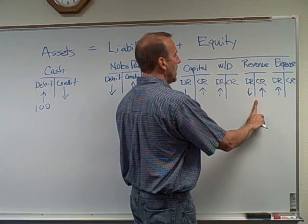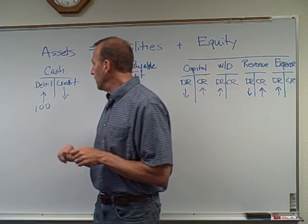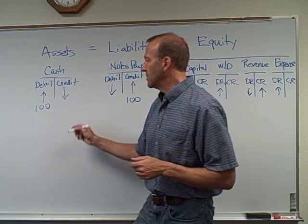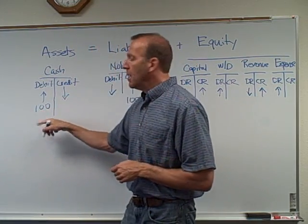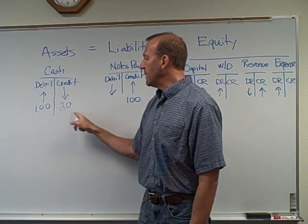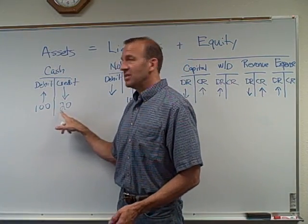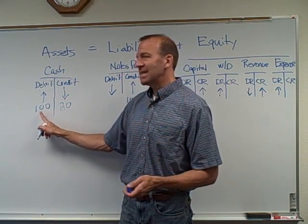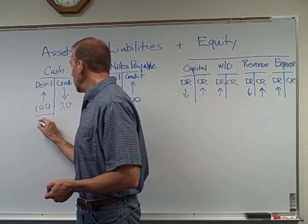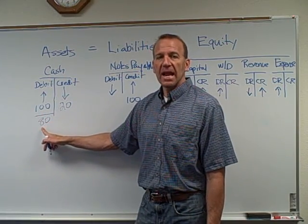So to summarize: withdrawals and expenses increase with debits; capital and revenue increase with credits. Now let's talk about how balances work in accounts. Say our cash account has a $100 debit but also a $20 credit from various transactions. To find the overall balance, subtract the two numbers: 100 minus 20 gives you $80. Whichever side is largest gets the balance — so here, we put a line underneath and the new balance is an $80 debit balance.